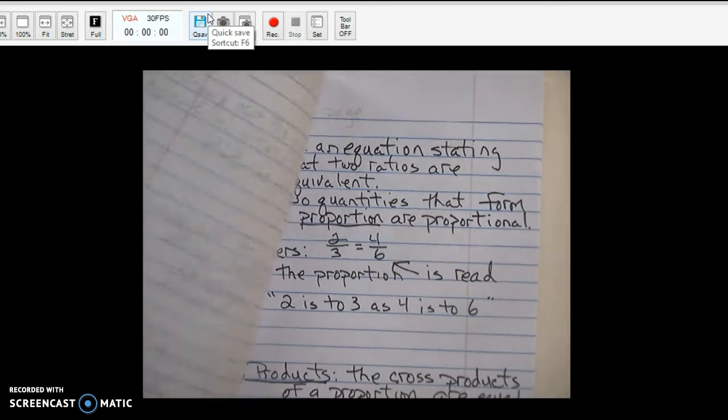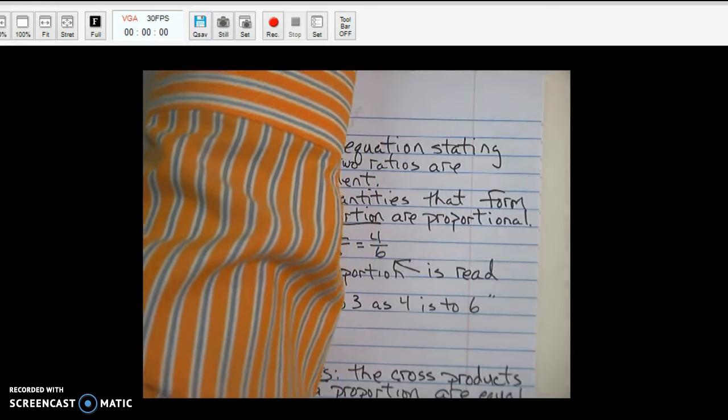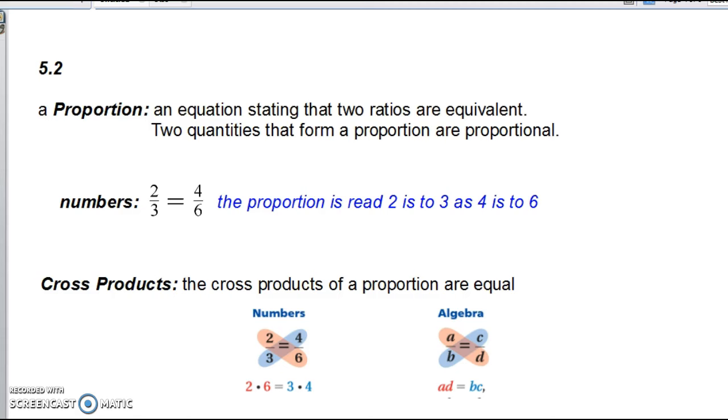Turn the page. Go to 5.2. 5.2. I'm going to go back to the movie. All right. 5.2. Three terms for this page. Proportion, numbers, and cross products. We'll talk about this in a second.